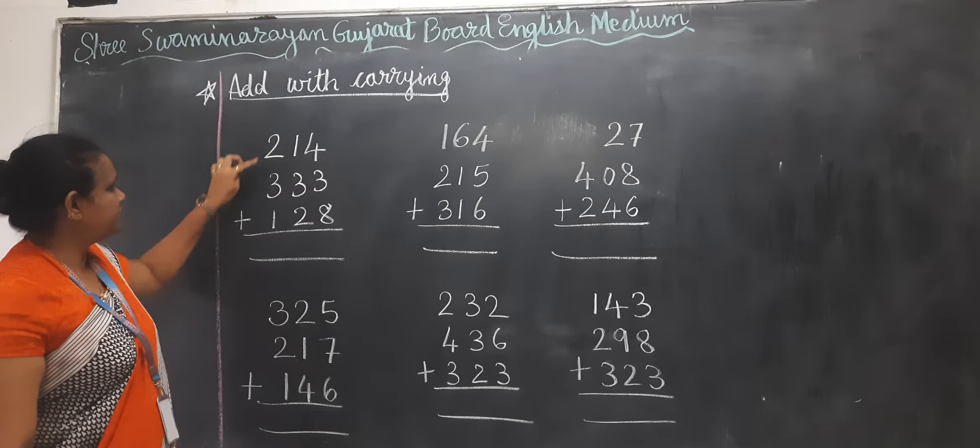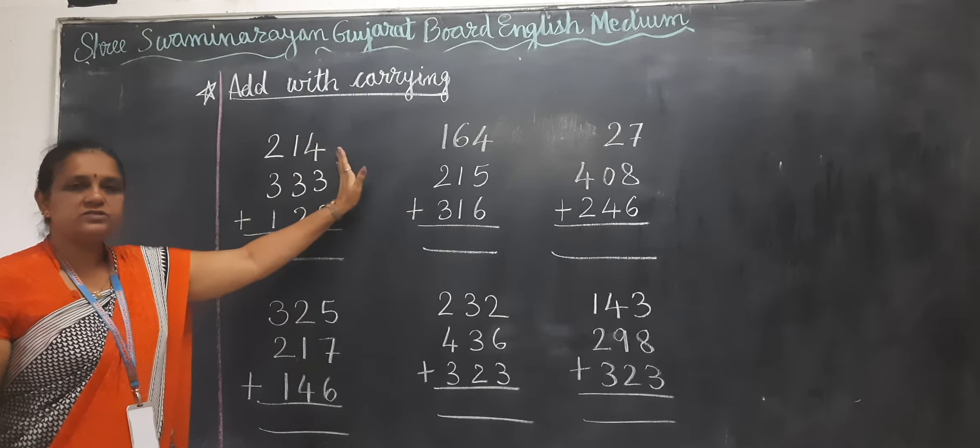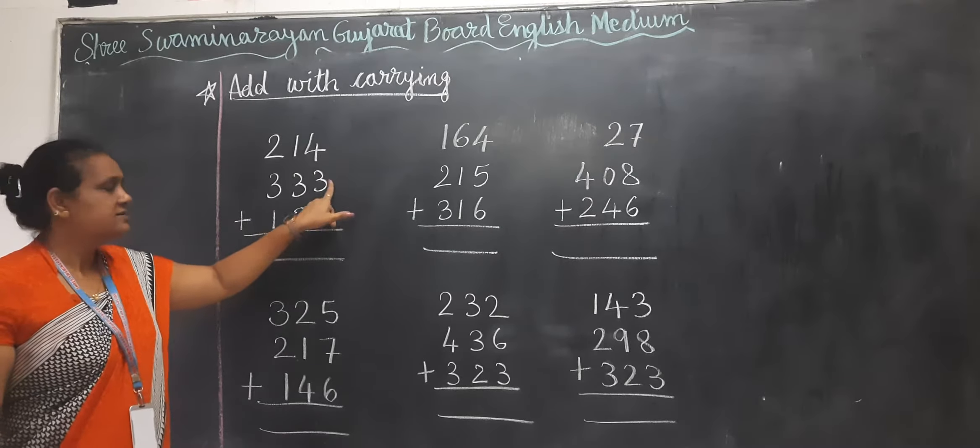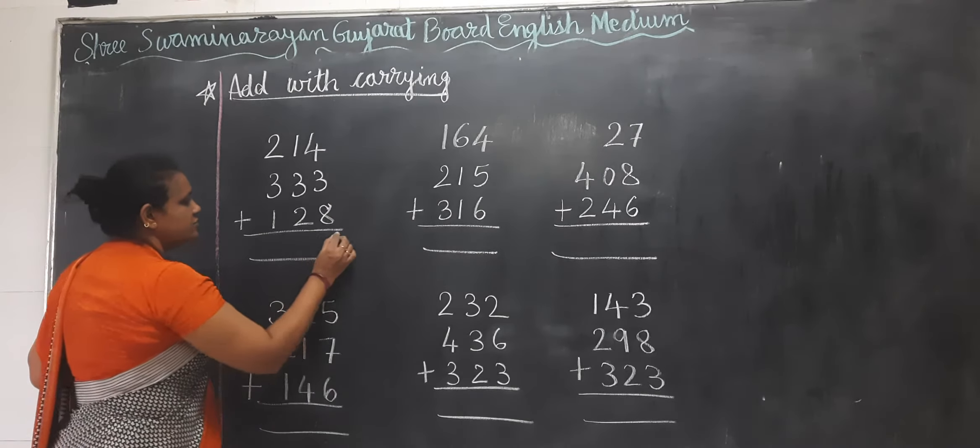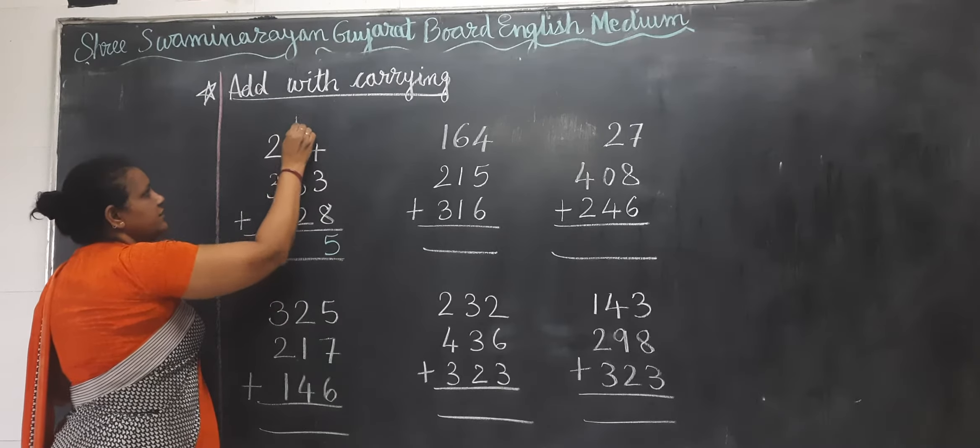3 digit with 3 digit. First of all we have to start with right hand side. 4 plus 3 equals 7. 7 plus 8 equals 15, so 5 here and 1 to carry forward.